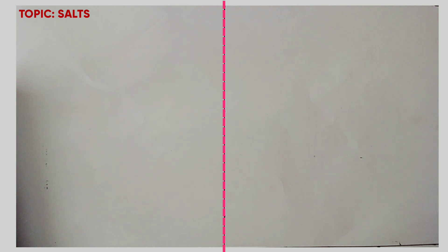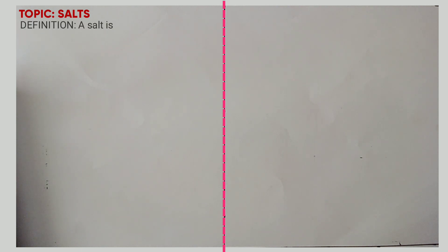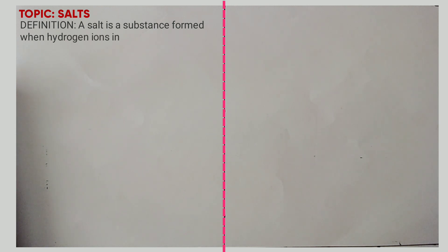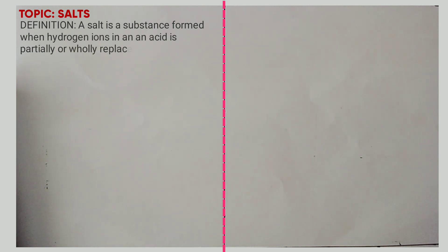A salt is a substance formed when hydrogen ions in an acid are partially or fully replaced by a positive ion. The positive ion can be a metal ion or ammonium ion.